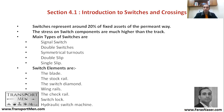Every switch has the following elements: the blade, the stock rail, the switch diamond, wing rails, the check rail, switch lock, and hydraulic switch machine. The blade and stock rail are responsible for directing the train. The switch diamond separates the two sides. The wing rail and check rail provide additional support, while the switch lock and point machines help move the stock rail from one side to another.